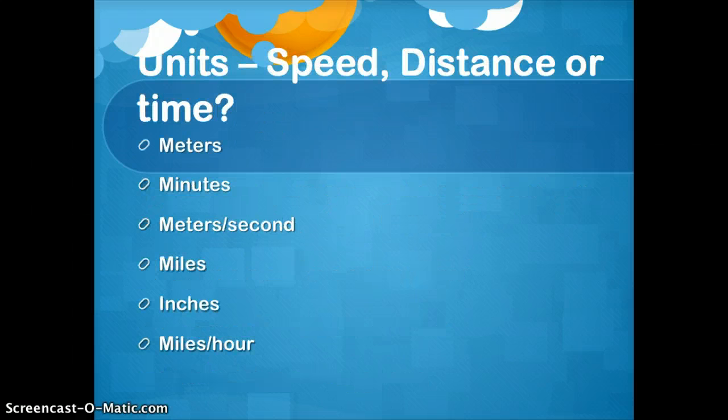Also, make sure that when you're looking at a problem, you can easily tell what it's asking you. So if it was meters, that's a distance. Minutes is a time. Meters per second is a speed. Miles is a distance. Inches is a distance. Miles per hour is a speed. So make sure you can look at something and know what it's asking for. Anything meters per, miles per is going to be a speed. And then as far as how far it can go, it's a distance. Minutes, seconds, hours will be time.